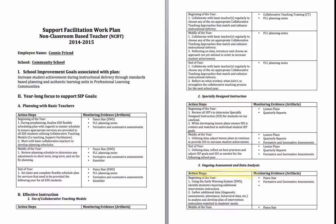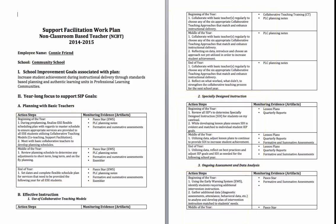The fourth thing the work plan must contain are the action steps the NCBT will take throughout the course of the quarter, semester, and/or year to achieve the goals, and a way to monitor progress throughout the school year. As you can see in our sample work plan, Ms. Friend has listed the action steps she will take under each big rock at various times throughout the school year. Ms. Friend has also included how she will monitor each step with the various evidences and artifacts that can be used.